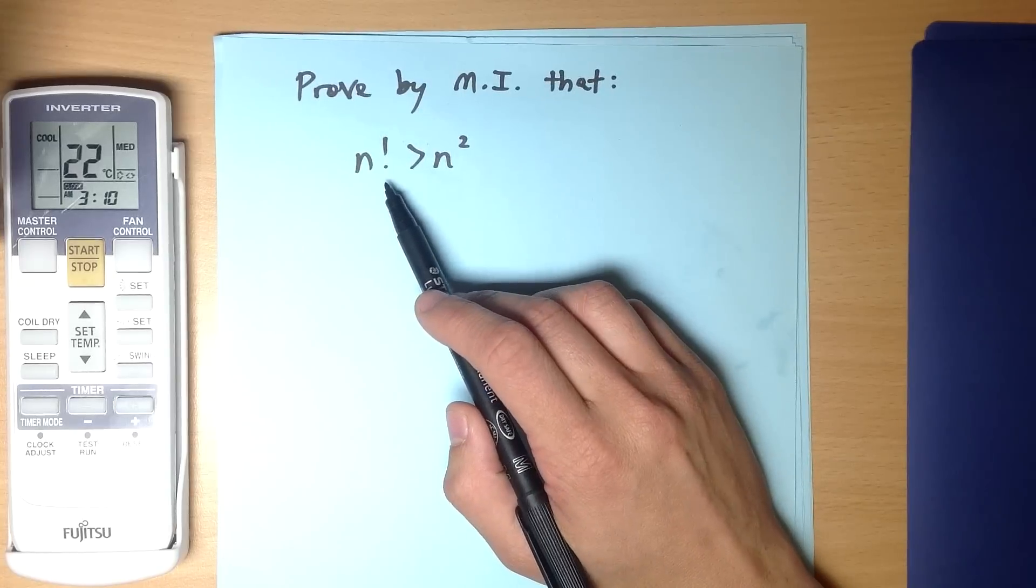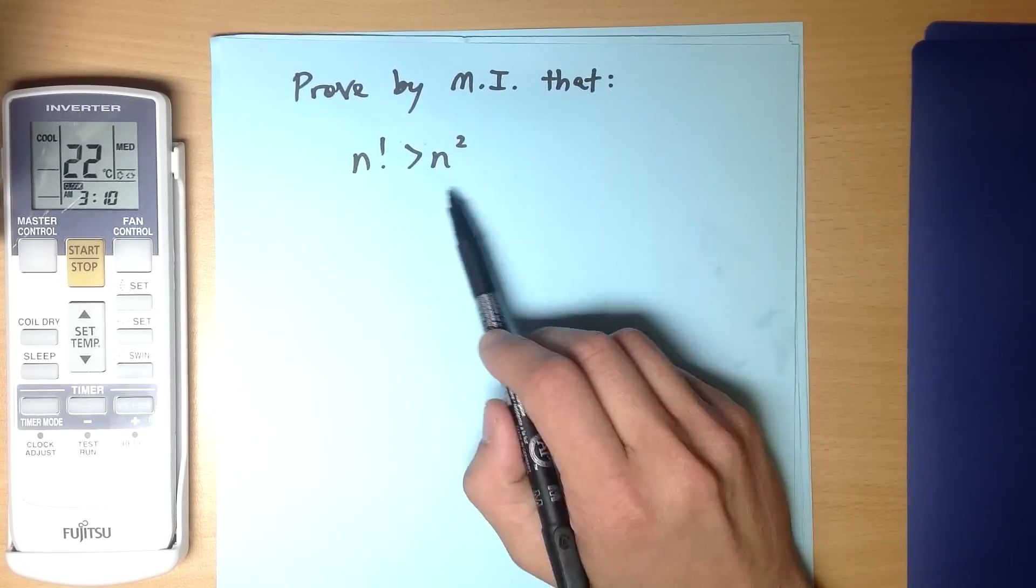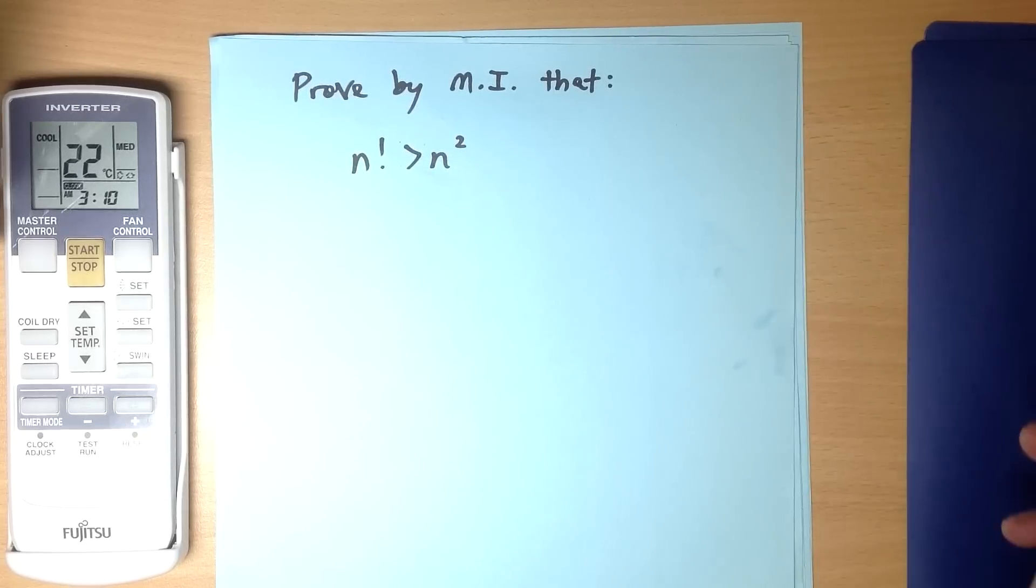Now because we're dealing with factorials, we've got n being an integer, a positive integer, but the person who sent this question to me didn't give me a domain, didn't say prove for such and such a value.